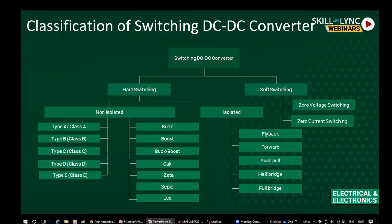Buck converter is a step-down DC-to-DC converter that reduces input voltage to a lower value. Boost converter is a step-up converter that increases the input DC voltage to a higher value. Buck-boost and Cuk converters both provide step-down and step-up operation; these converters provide output voltage with reverse polarity relative to the input, so they are also called inverting converters. Zeta and SEPIC converters also provide step-down and step-up operation, but the output polarity is the same as the input polarity. Luo converters are essentially a series of boost converters that provide boost operation.